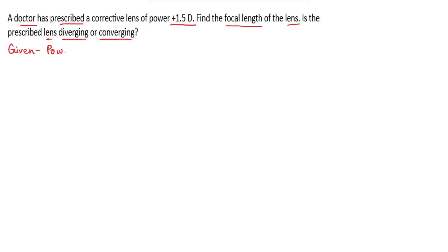Power of lens is given as P = +1.5 diopter. Now we can use the formula of the power of lens which is P = 1/F. F is the focal length which is in meters.